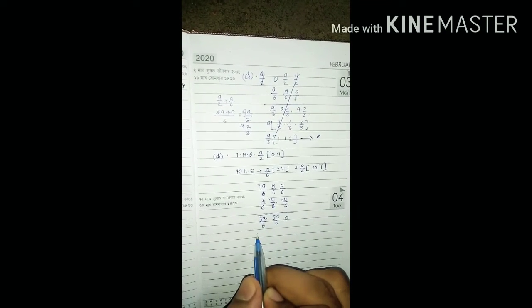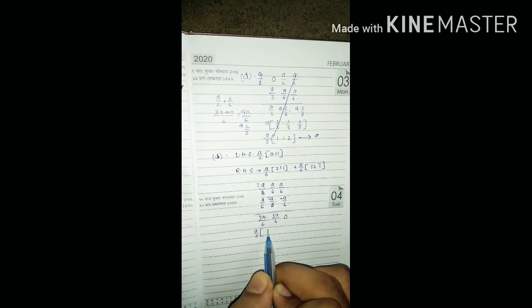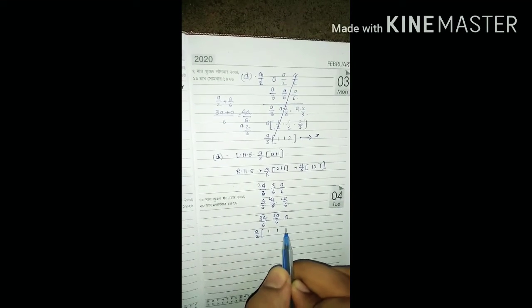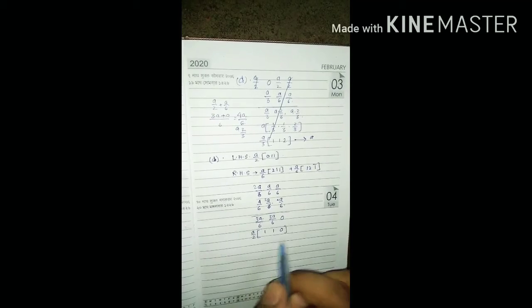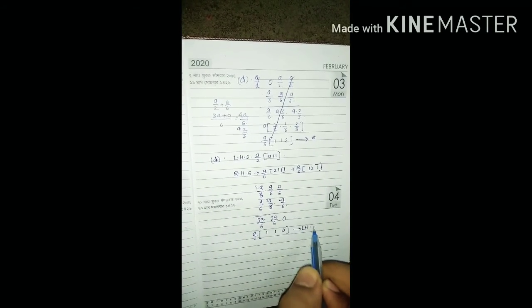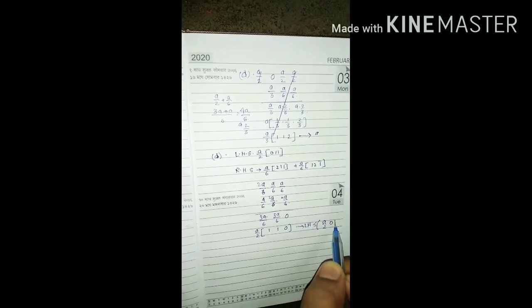If I take common 3 a by 6, you can see, let's check. If I take 3 a by 6, we are getting 1, 1, 1. But what is our left hand side? Left hand side is a by 2, 0, 1, 1.